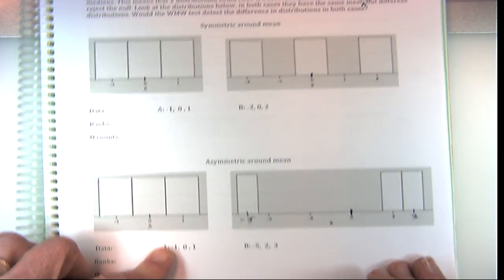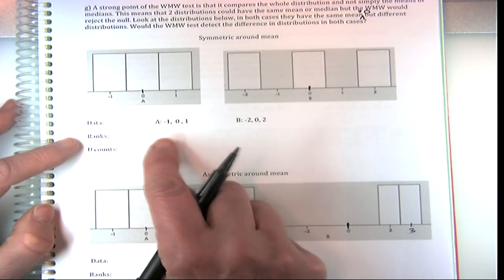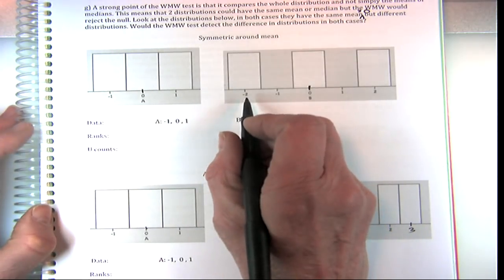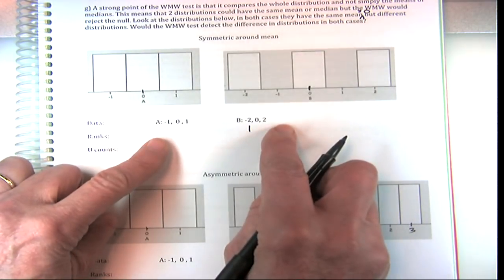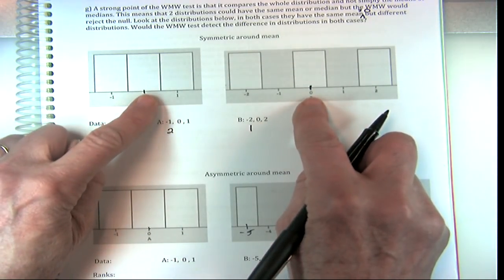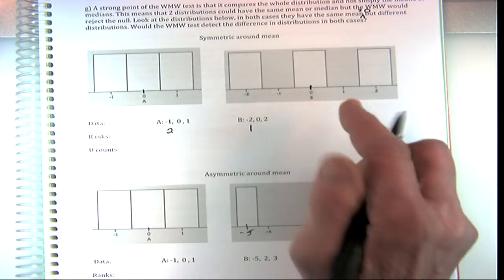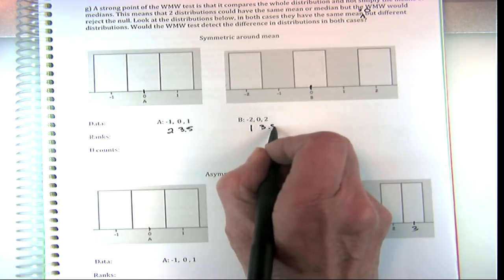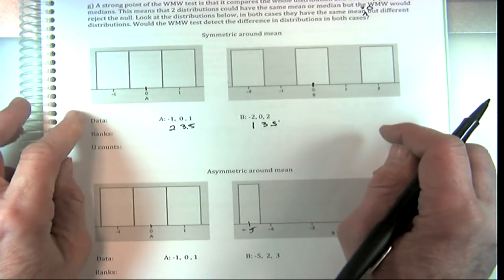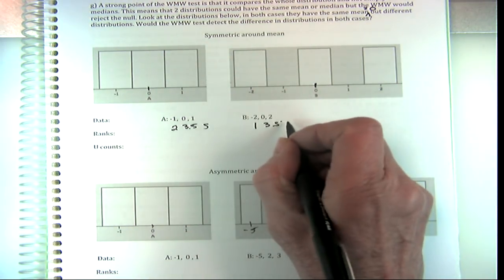Let's try it for when it's symmetric around the mean. We can do the test either by converting these numbers to ranks — numbers one through six — or to U-counts. Starting with the ranks: the lowest number gets rank 1, the second lowest gets rank 2. Now, these are both zeros, so they take up spots three and four. We give them both ranks of 3.5 and 3.5. Then the next ones are five and six, because there are six numbers total.